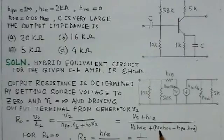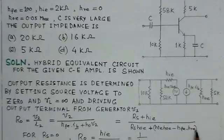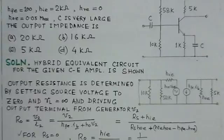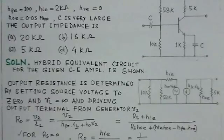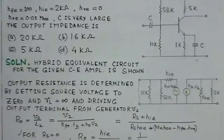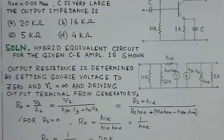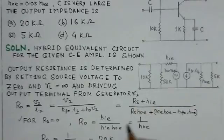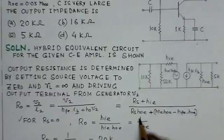This expression, but we know HRE is 0, so if RS is 0, this expression can be further simplified and this becomes 1 over HIE HOE.